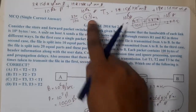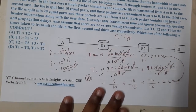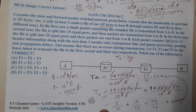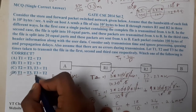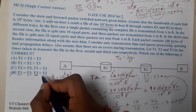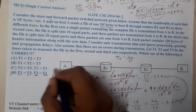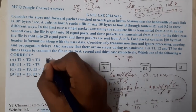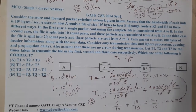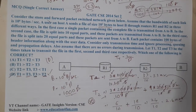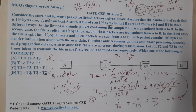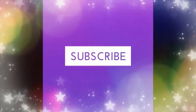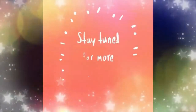So T1 = 3.3ms, T2 = 2.4ms, and T3 = 3.3ms. T1 equals T3, and both are greater than T2. Option D is the correct answer. I hope everyone got a clear idea. In the next lecture we will continue with the next question. Thank you — like, share, and subscribe for more videos.